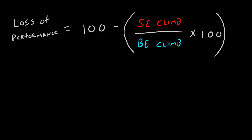Cool. That means that we can write up our equation here. So, loss of performance equals 100 minus something divided by something times 100. Alright, and we figured out that our both engine climb rate is 1,250 feet per minute.